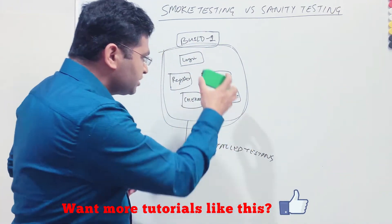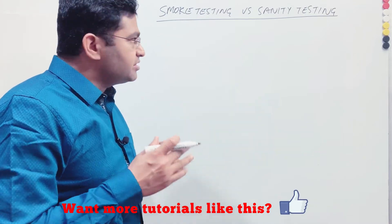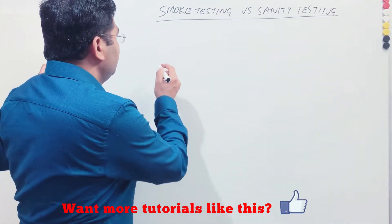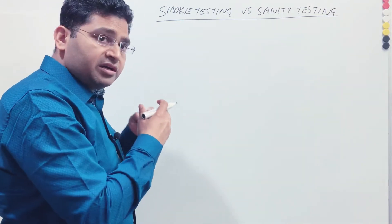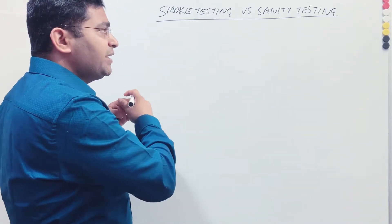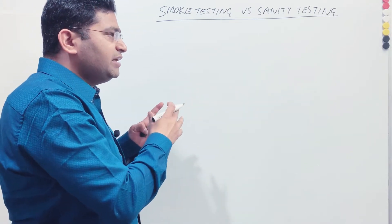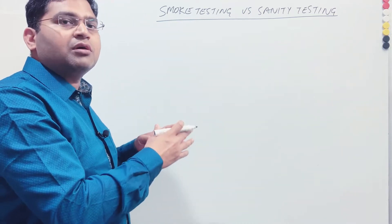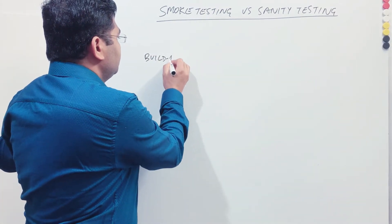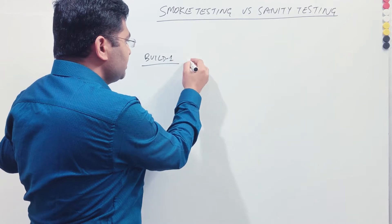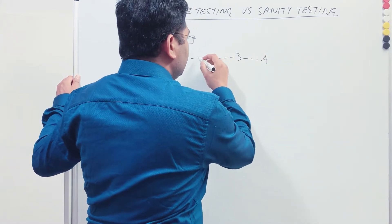Now moving to sanity testing. Smoke testing is done in the initial phases when builds are relatively unstable. Sanity testing, on the other hand, is done when builds have become stable and you are verifying key functionalities after a defect fix or when new functionality has been added. For example, during the initial phases you will mostly be doing smoke testing, and as builds mature and become stable you move to sanity testing.